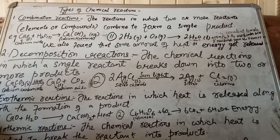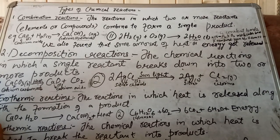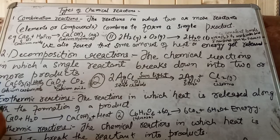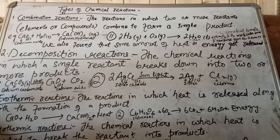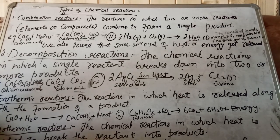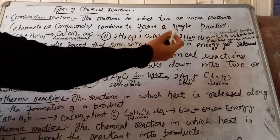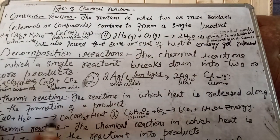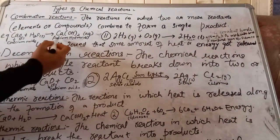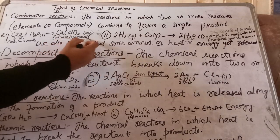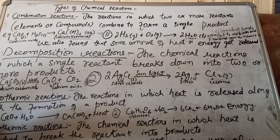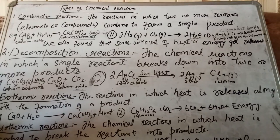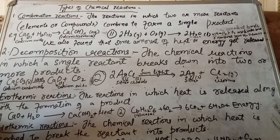The first important type is combination reactions. What happens during a combination reaction? Two or more reactants — whether elements or compounds — combine together, come together, react with each other, and form a single product. So in combination reactions, we only get a single product; two or more reactants react with each other and give a single product.